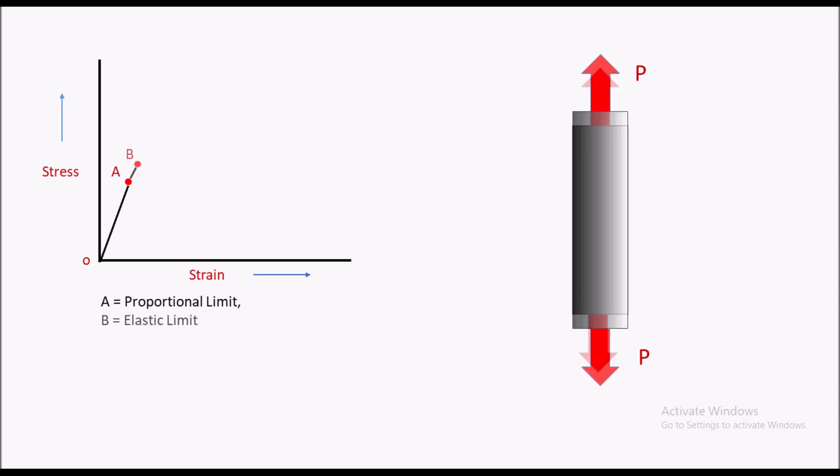Then we have the second point, that is point B, the elastic limit. Here you can see the curve is slightly deviating from proportionality. Point B and point A are actually very close to each other.